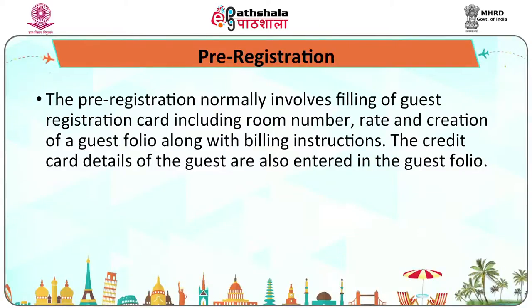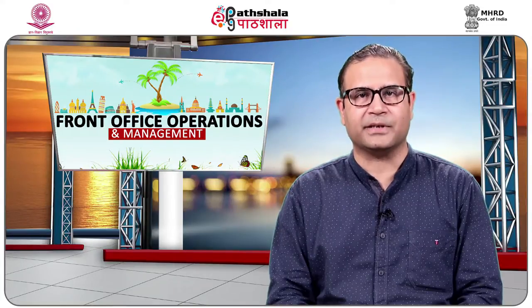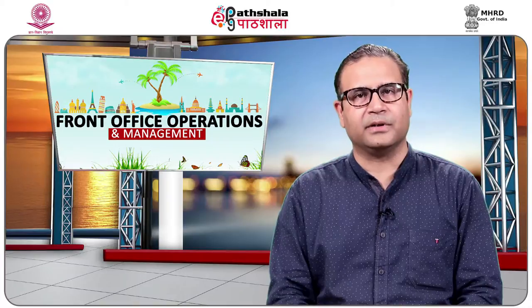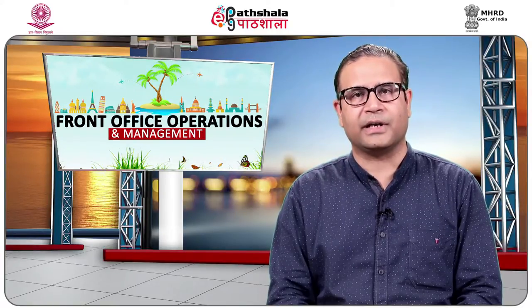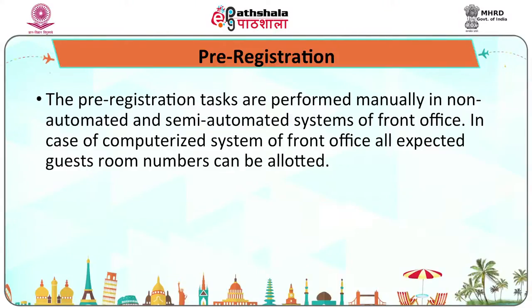Pre-registration normally involves filling the guest registration card including room number, rate, and creation of a guest folio along with billing instructions. The credit card details of the guest are also entered in the guest folio. The room number is generally allocated in case of VIPs and other special guests. It is not advisable to block a room for every expected guest due to possible late arrivals, cancellations, amendments, or requests for room changes. In non-automated and semi-automated systems, pre-registration tasks are performed manually. In computerized systems, all expected guest room numbers can be allotted automatically.